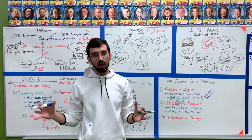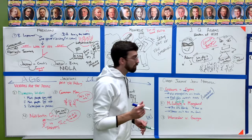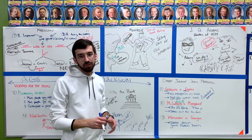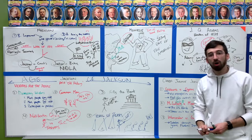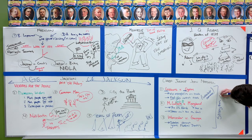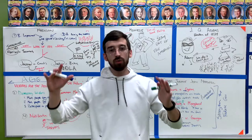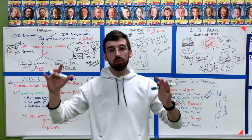Last court case: Worcester versus Georgia. This is when the Cherokee are trying to keep from having to walk the Trail of Tears, to keep from being kicked off their land. This court case famously says that states cannot ignore federal treaties. What you should see is that each of these court cases is different, but they all do the same thing — they all strengthen the federal government. Review this because viewing things visually helps remember what we talked about. See you next time.